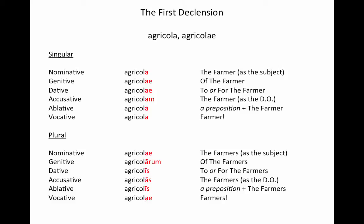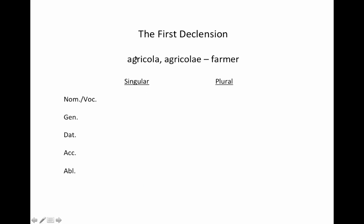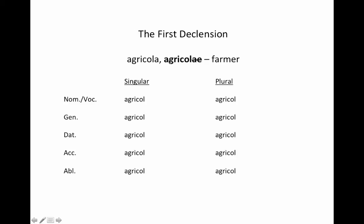Now that you've seen all of these, let's talk about how you put these endings on any given noun. Whenever you see a vocab word, you'll be given two terms. Here we have agricola and agricolae — the nominative singular and the genitive singular. The process to put the endings on is that you always go to the genitive to get the stem, because sometimes a noun will have an irregular nominative. So you go to the genitive, drop off the 'ae' ending, and this gives you your stem for all other endings to be added onto. That stem is agricol-.